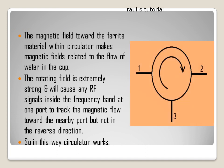Similarly, the magnetic field applied to the ferrite material within the circulator creates magnetic fields related to the flow of water in the cup. The rotating field is extremely strong and will cause any RF signals inside the frequency band at one port to track the magnetic flow toward the nearby port, but not in the reverse direction. This is how the circulator works.